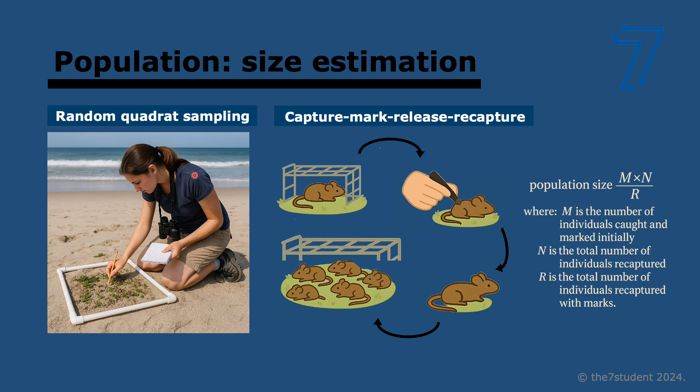For sessile organisms — those that do not move — you can do random quadrant sampling. You basically take a square frame, place it at random positions in the habitat, and then record the number of organisms present each time.